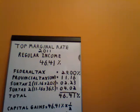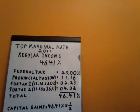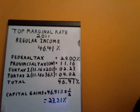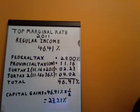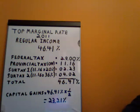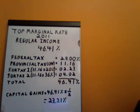How do we determine the capital gains rate? Well, capital gains is essentially taxed at half of what regular income is. So we take 46.41%, we divide it by half, we get 23.21%. That is our top combined Ontario-Federal capital gains rate for 2011.